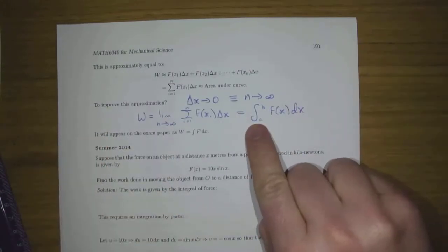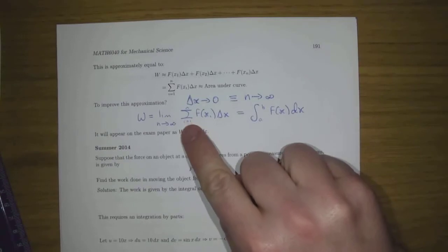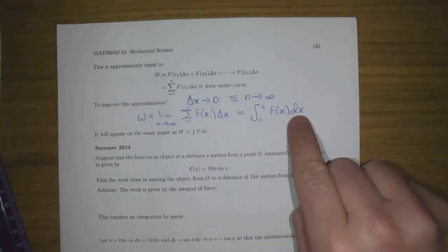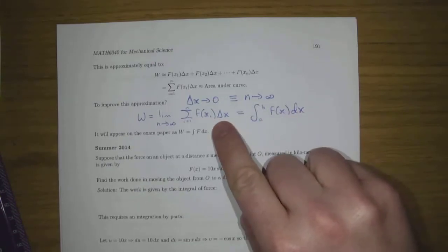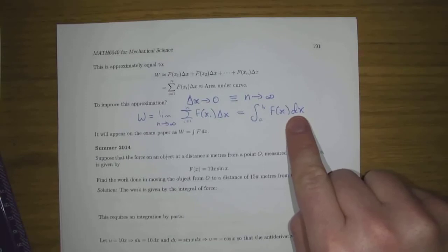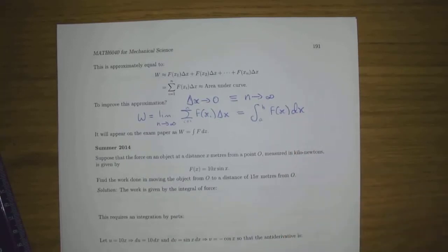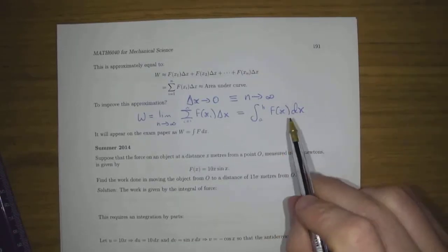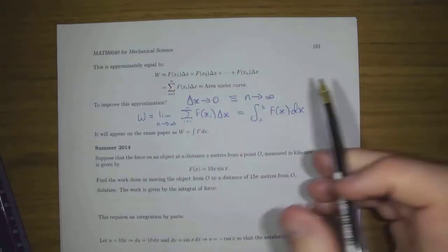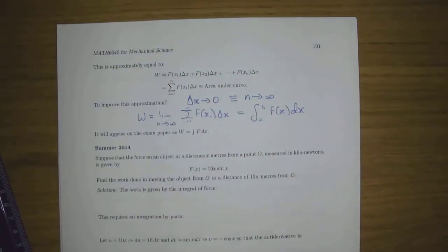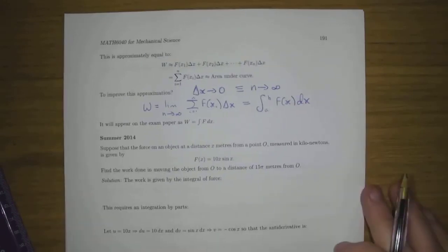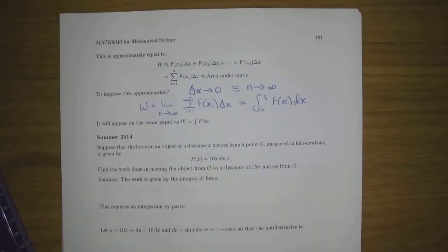The integral symbol is a big S standing for 'sum'. The Δx becomes a little dx — the delta is a capital Greek d and this is a little d. So this is showing the relationship between the work done and the area under the curve. To improve the approximation you make it an integral. You have three things: the work, the area under the curve, and the integral — the integral is defined as the area under the curve, and the area under the curve is the work. So the work equals the integral of force against distance.